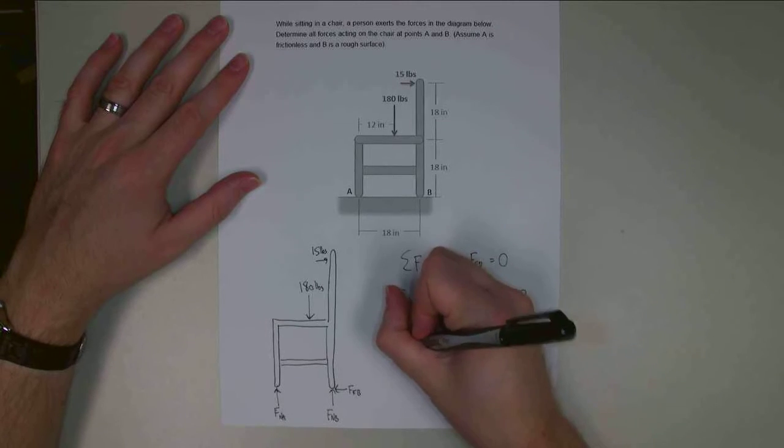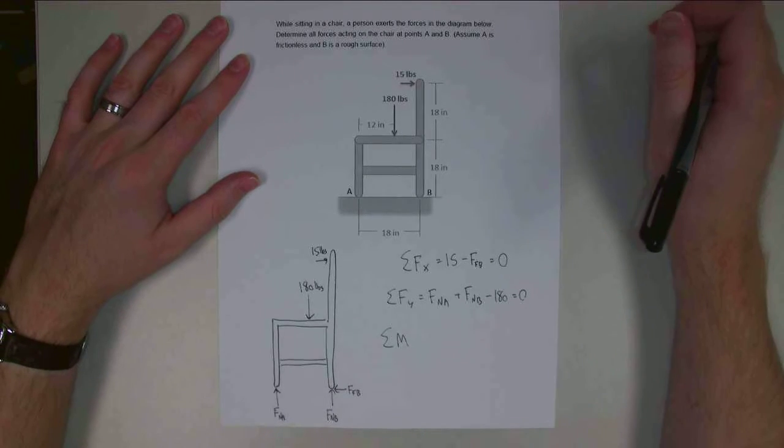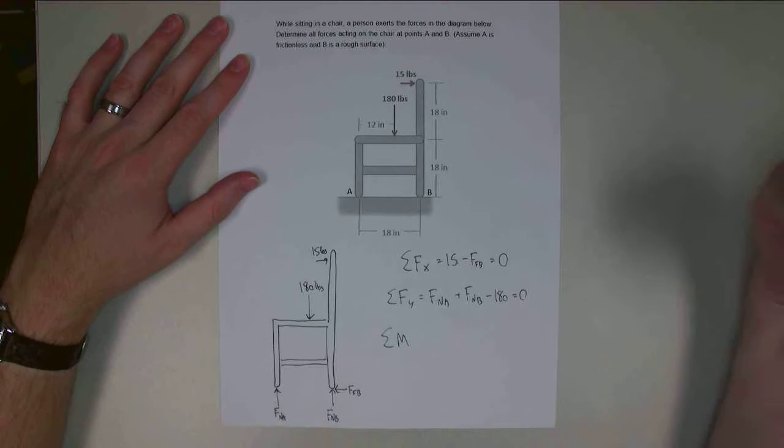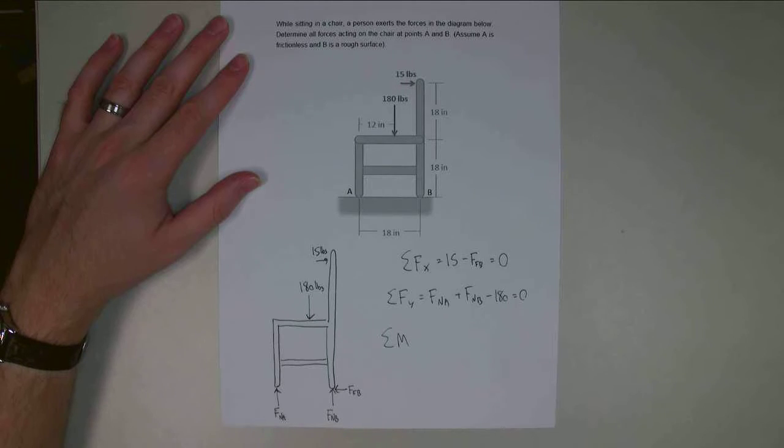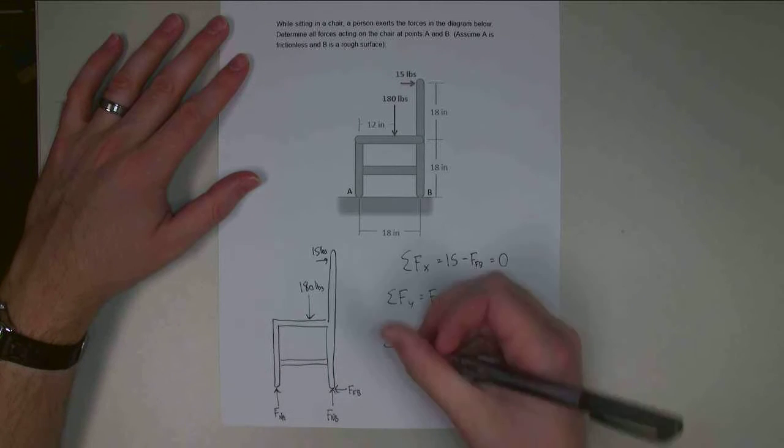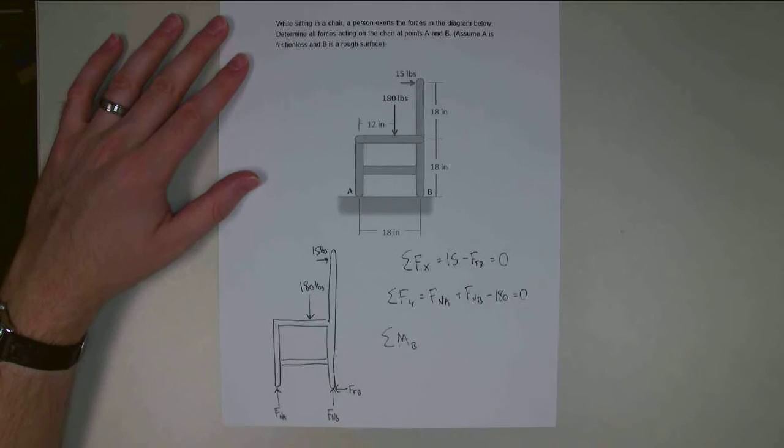And for the sum of the moments, I want to pick a point that's going to give me a limited number of unknowns. And so back here at point B, I've got the normal force and the friction force acting at that point. So I'm going to take the moment about point B as my moment equation.